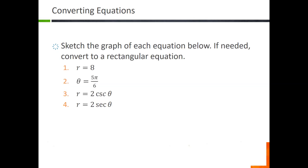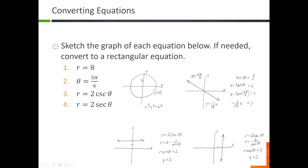Let's look at sketching graphs and converting equations. r equals eight represents all points eight units from the origin — that's just a circle: x squared plus y squared equals 64. Theta equals five pi over six represents all points on that particular angle — a line. Use the tangent equation and solve for y to find its equation. r equals two cosecant theta and r equals two secant theta are a horizontal and a vertical line respectively: r equals two cosecant theta becomes y equals two, and r equals two secant theta becomes x equals two.